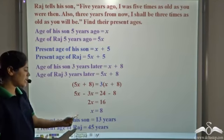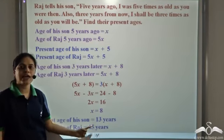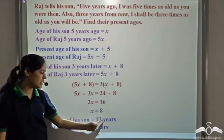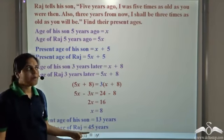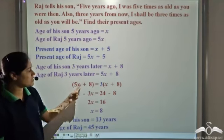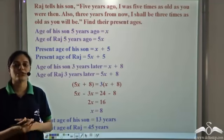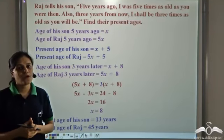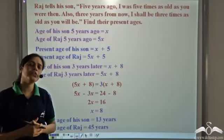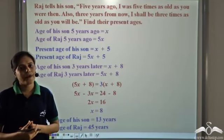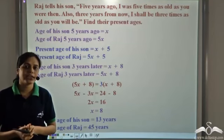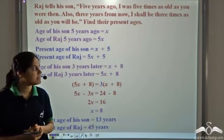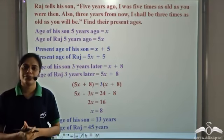So we see that we get the same values as before: thirteen years and forty-five years. But we solved this using just one variable. A problem can be solved either by using two variables or by using a single variable — you can solve it by any method, whichever is simpler.